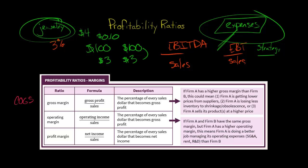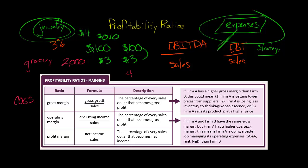If we have two companies in the same industry with similar pricing strategies, and one has a higher gross margin than the other, it could be that they are getting better prices from suppliers. For example, if one grocery store has 2,000 locations and buys a ton of cereal, they get a lower per-unit cost than a competitor with only four stores. The larger company can negotiate a better price, giving it a higher gross margin.